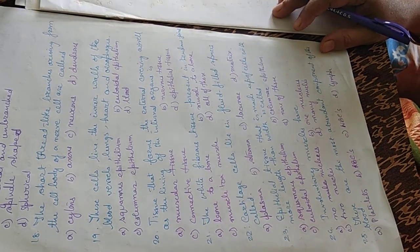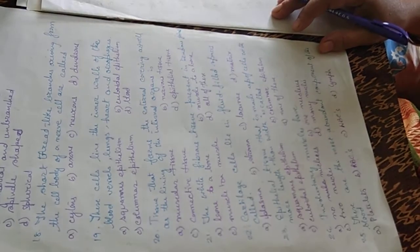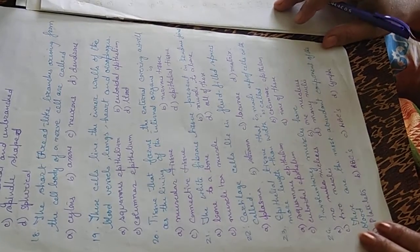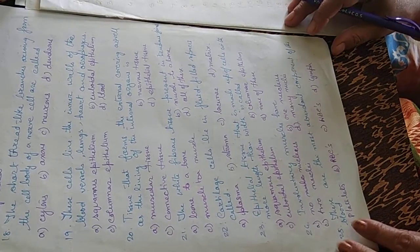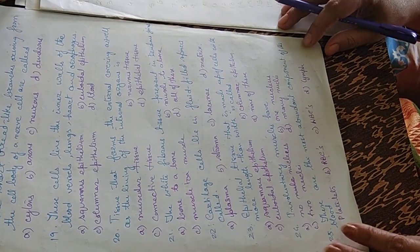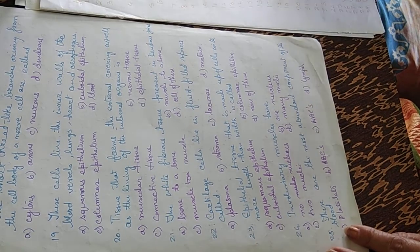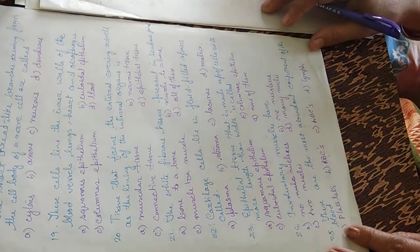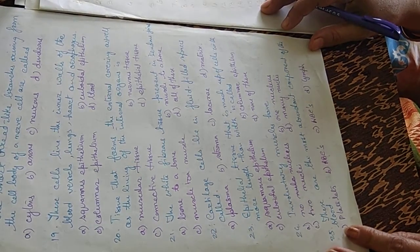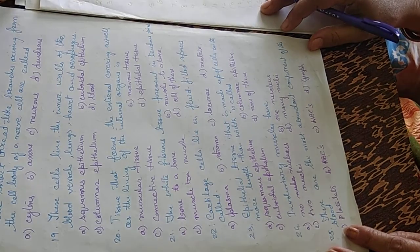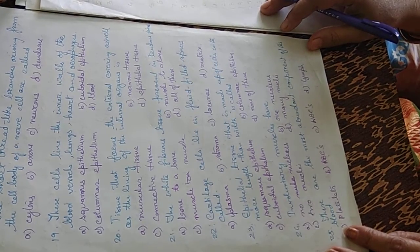Twenty-fourth question: involuntary muscles have no nucleus, one nucleus, two nuclei, or many nuclei. The answer is B — one nucleus. Involuntary muscles have one nucleus.